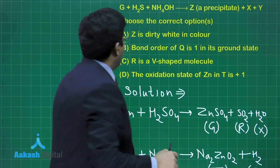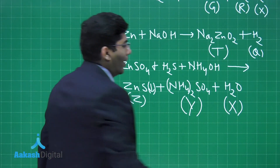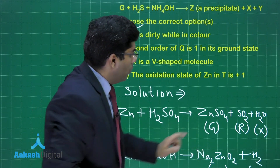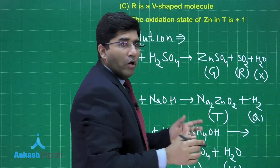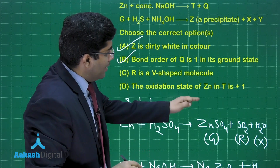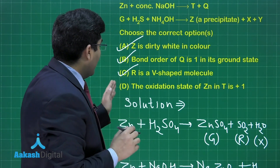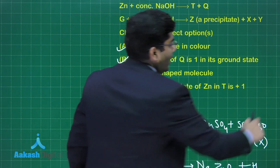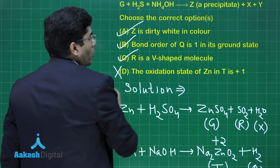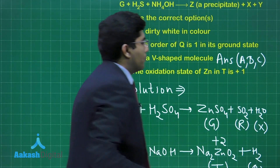Now evaluating the options: Option (A) — Z is dirty white in color. Z is zinc sulfide (ZnS), which is indeed dirty white in color, so option (A) is correct. Option (B) — bond order of Q is 1 in the ground state. Q is H2, and its bond order is 1, so option (B) is also correct. Option (C) — R is V-shaped. R is SO2, which is bent in shape, so option (C) is correct. Option (D) — oxidation state of zinc in T is +1. T is sodium zincate (Na2ZnO2) where zinc has oxidation state +2, so option (D) is incorrect.